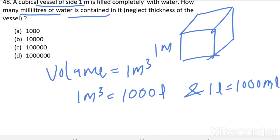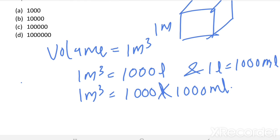Then 1 meter cube equal to 1000 liters, 1000 into 1000 ml. 1 liter equal to 1000 ml, then 1000 liter equal to 1000 into 1000 ml.